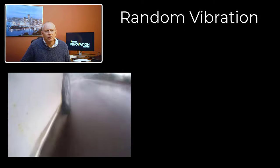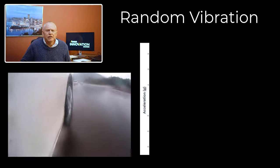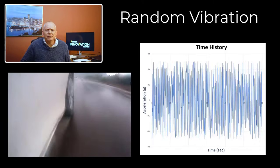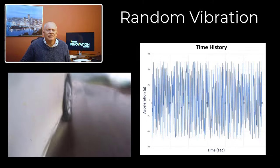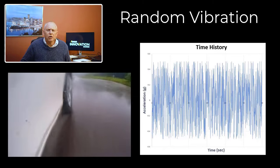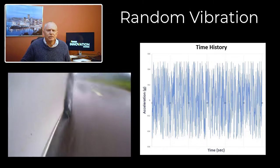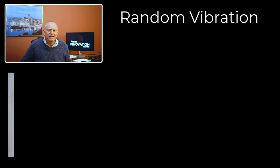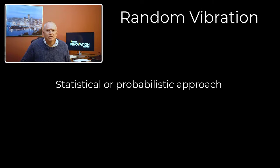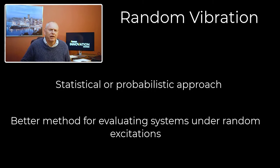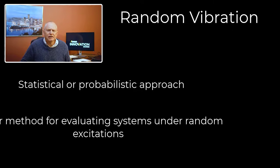Consider a car traveling on a road, for example. The time history of the road is unique every time the car runs over the same stretch of road. Hence, it is not possible to predict precisely the response of a car component at a point in its time history. Instead, what we need is a statistical or probabilistic approach to determining the response of the system. This gives us a better method for evaluating our engineering parts under random excitations.